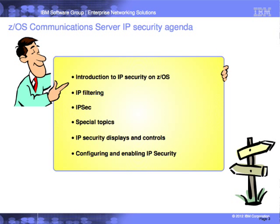Moving to slide 3, I'm going to start off with a brief introduction to IP security on z/OS, then move into the specific topics of IP filtering and IPsec. Then I'll mention a few things that are special to our IPsec implementation, followed by a brief discussion of IP security displays and controls, and then configuring IP security and enabling it on the platform.